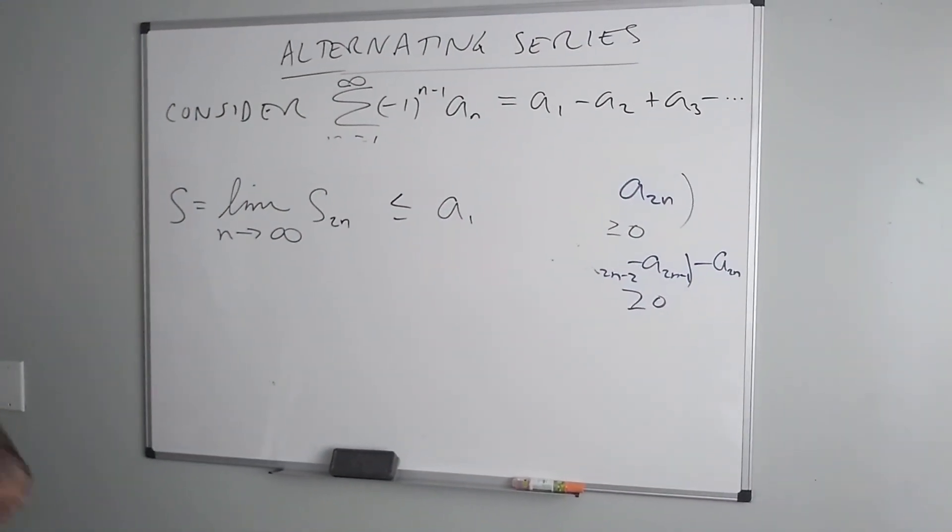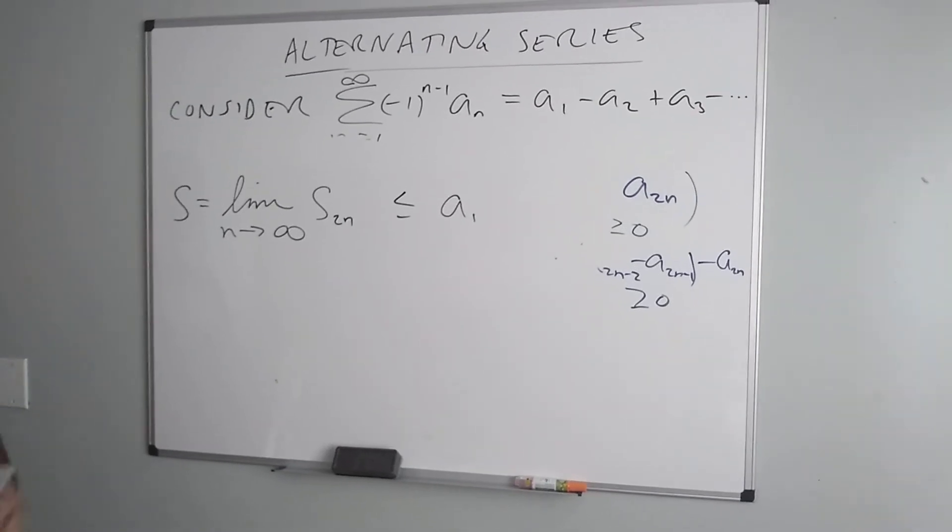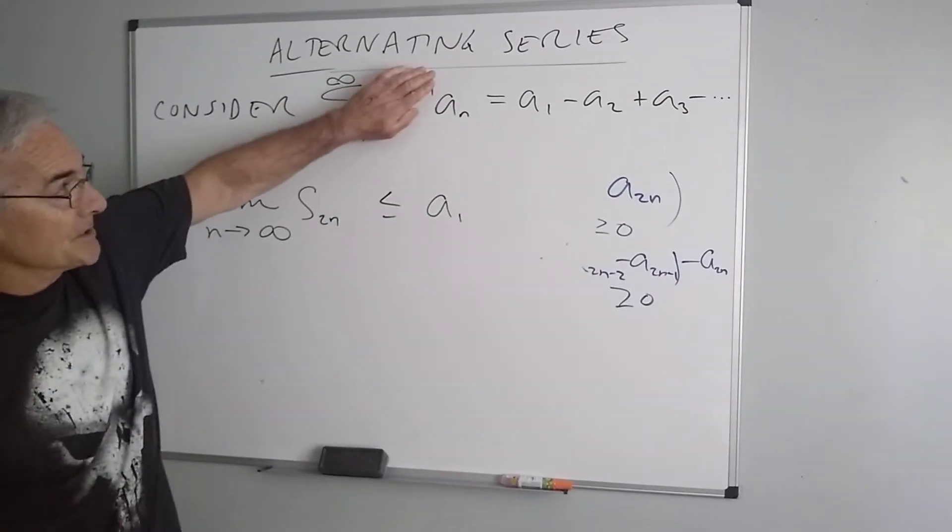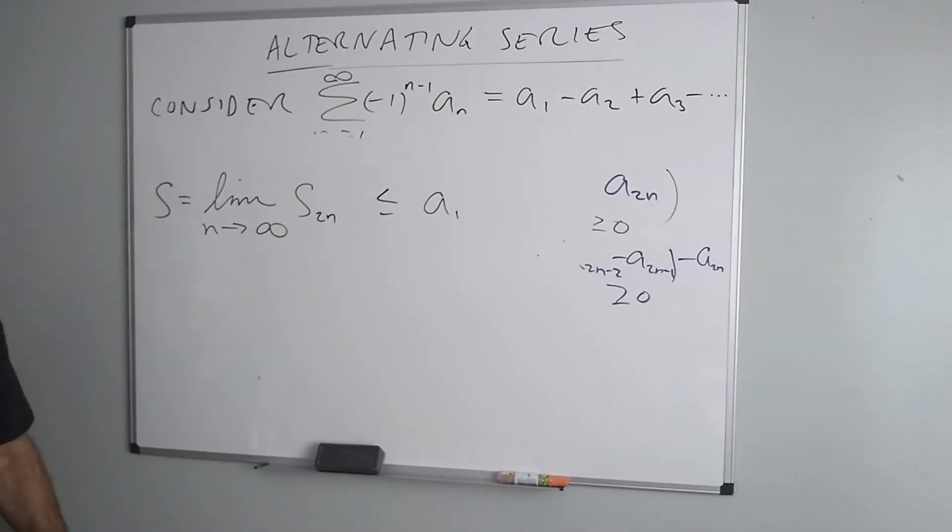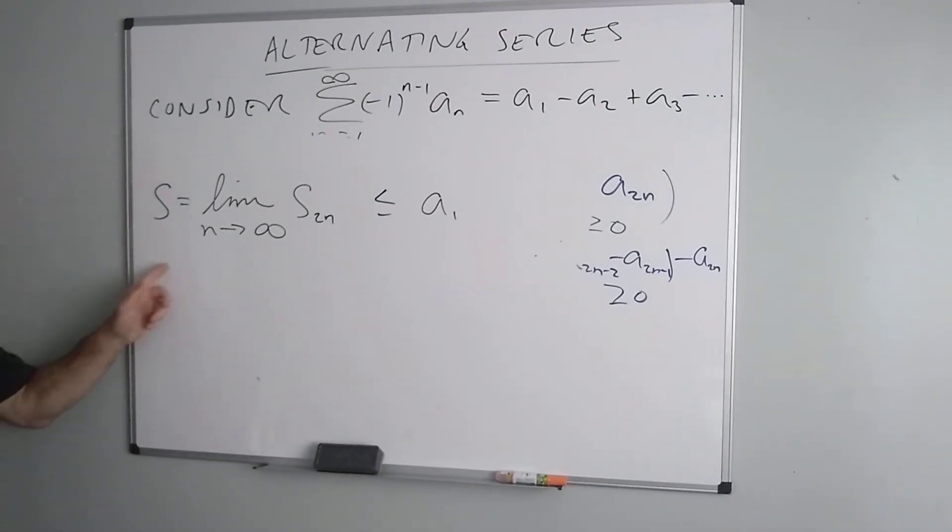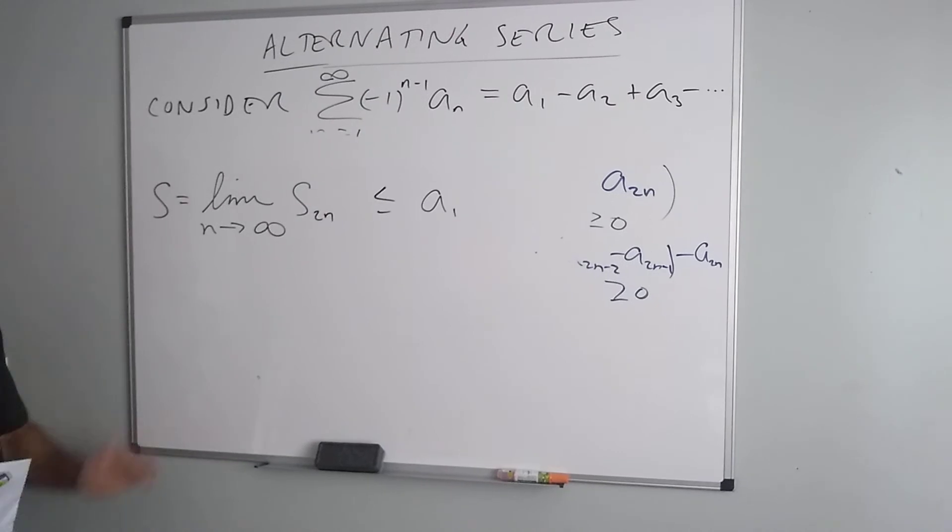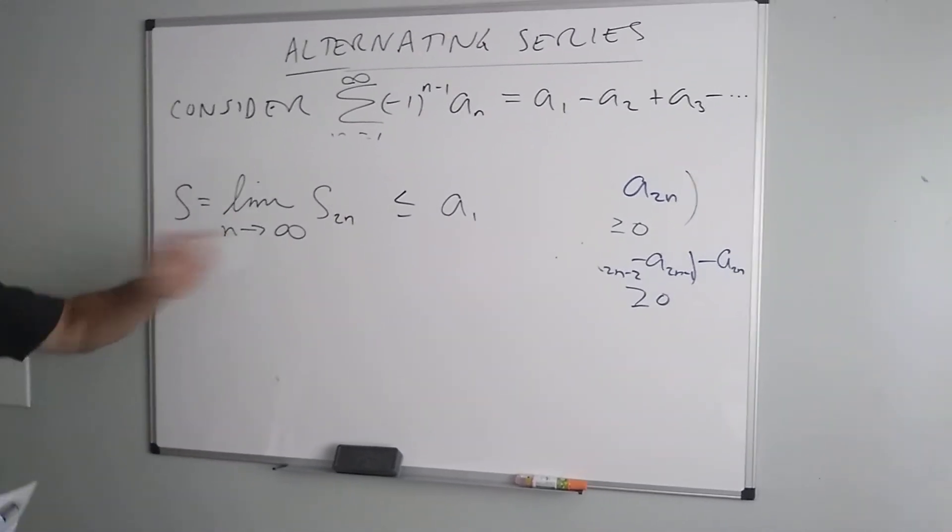So it turns out if I have an alternating series, regardless of what the non-alternating series does, if the series alternates, all I have to show is that the terms are getting smaller and approaching zero, and the non-alternating series, whether it converged or diverged, will have no effect on this.